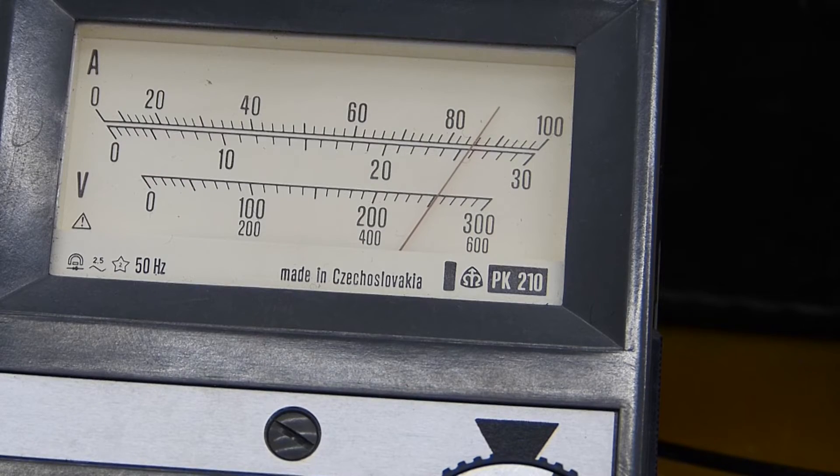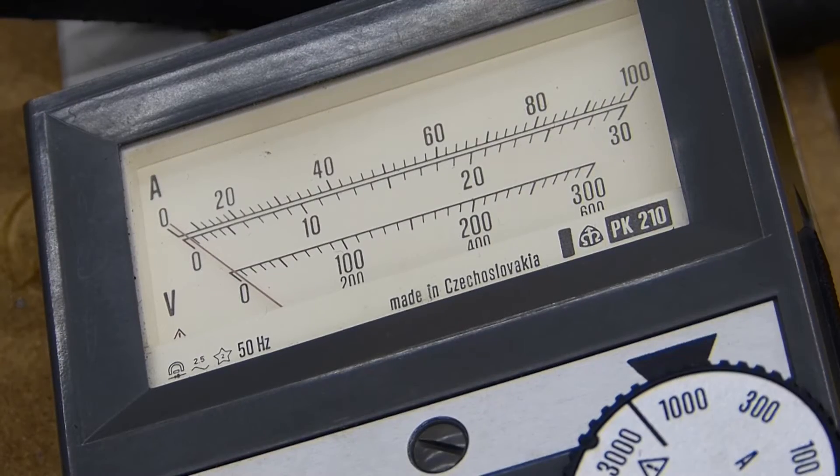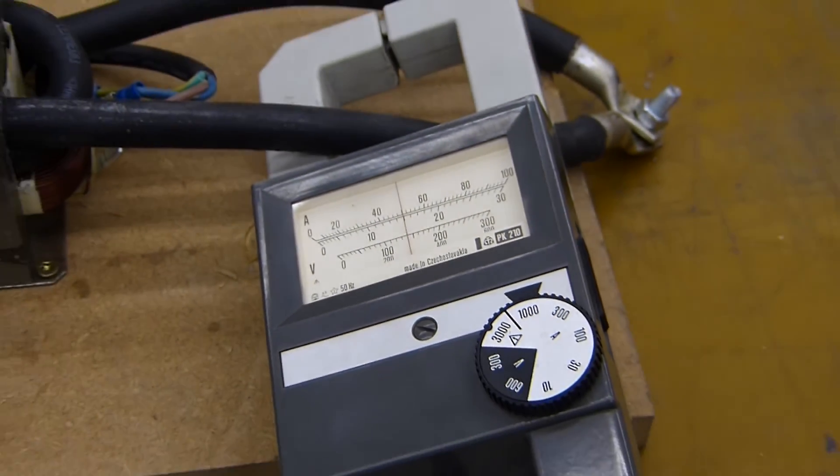And what you can see also is if you switch it on, it's not going in one rush up. It stops at a lower level and then it comes up. That's to prevent the saturation of the transformer. That's the output power or current directly measured at the thick wires.